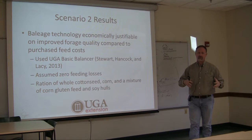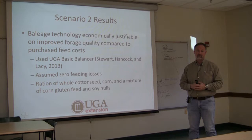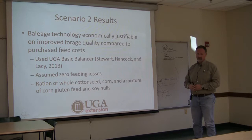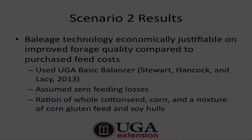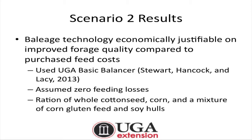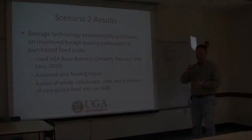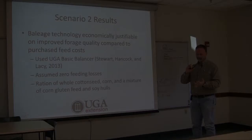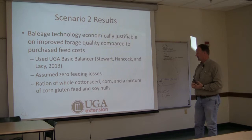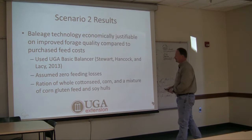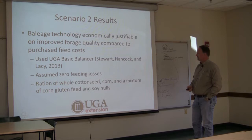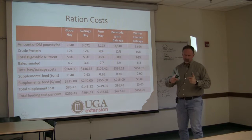In reality, most people wouldn't invest in this equipment solely to reduce storage losses — it's typically driven by trying to reduce feeding costs. So we'll take this step by step. For scenario two, we used a ration balancer developed by Dr. Stewart Hancock and myself, removing feeding losses from the equation and feeding a lactating cow 120 days of either bermudagrass hay, bermudagrass baleage, or winter annual baleage. Supplements considered were whole cottonseed, corn, and a 50/50 corn gluten feed and soy hull pellet mix.